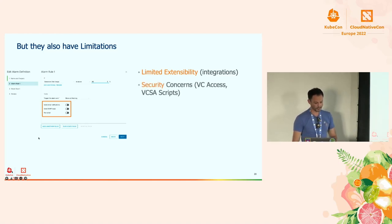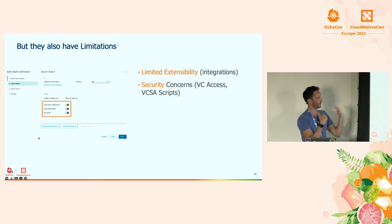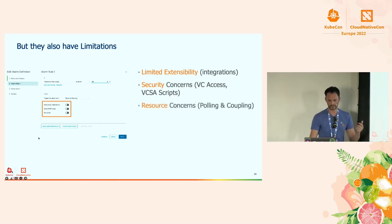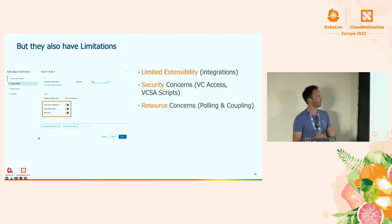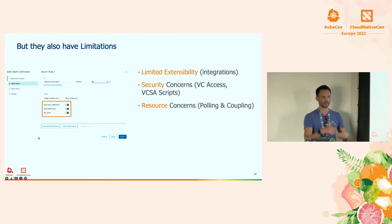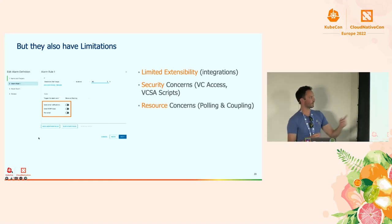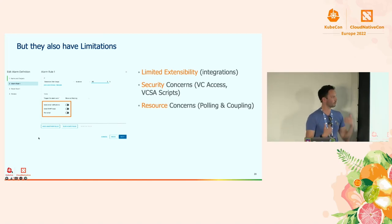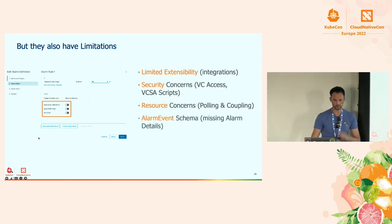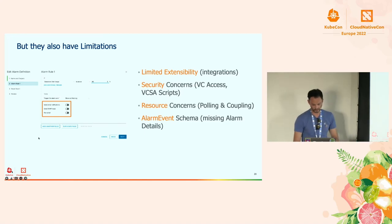You still need someone to have access to vCenter, which we want to move away from. Why give everyone vCenter access just for configuring and extending alarms? If you write external scripts, you have the polling problem: polling too frequently is troublesome for vCenter; polling too slowly means you might miss the alarm or react too late. And you need to know the vCenter APIs for that, which not everyone on different teams knows.